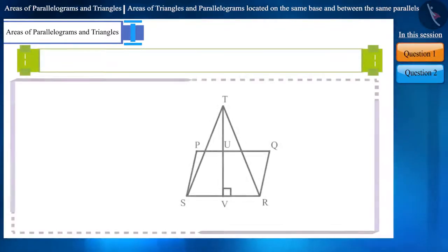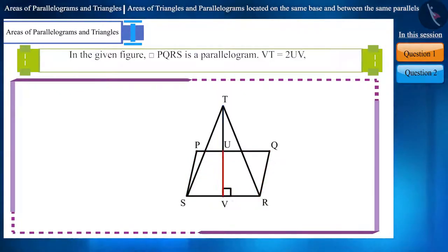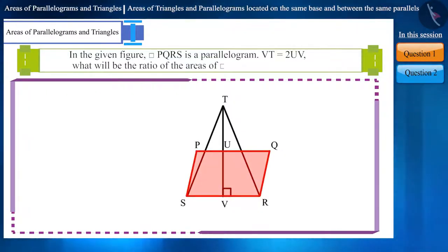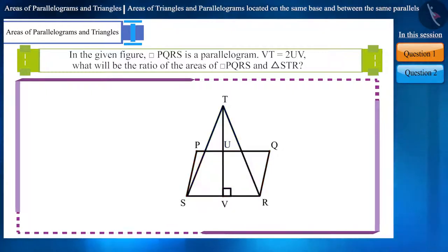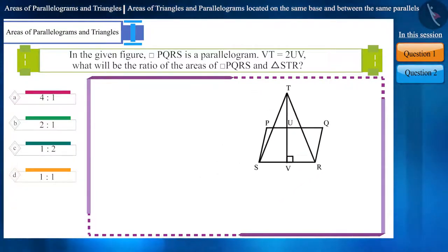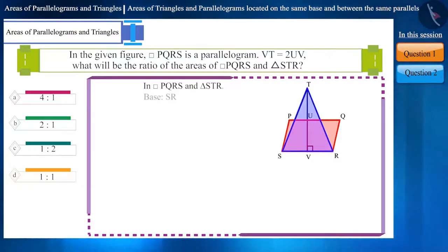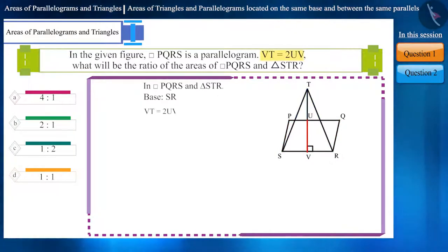Let's look at the first question. In the given figure, PQRS is a parallelogram. If VT is equal to 2UV, then what will be the ratio of the areas of quadrilateral PQRS and Triangle STR? Parallelogram PQRS and Triangle STR lie on the same base SR, and we have been given that VT is equal to 2UV.